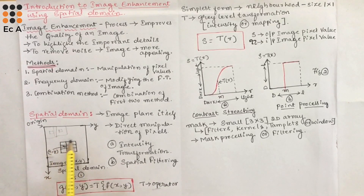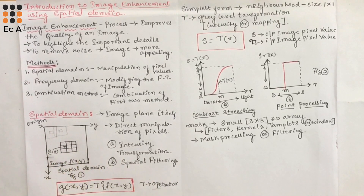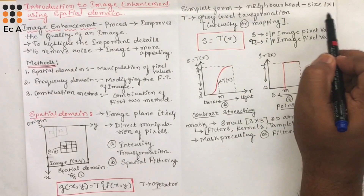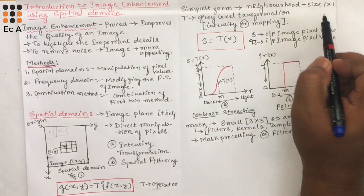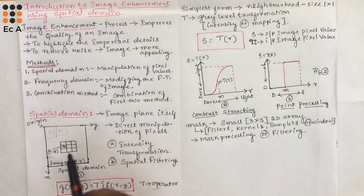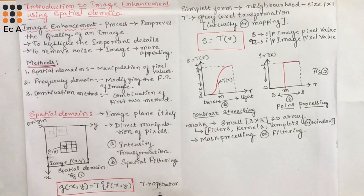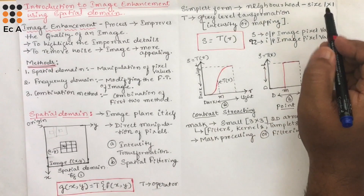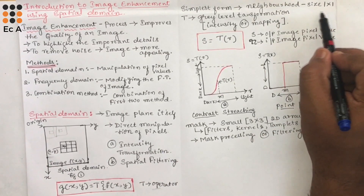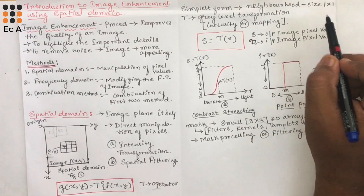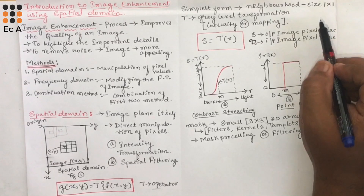Likewise, this operation is performed on the entire pixels of the image. The simplest form of T is when the neighborhood is of size 1×1, which means if we take only one pixel, that is the simplest form of the operator T. In this case, if we take the neighborhood of size 1×1, which is a single pixel, g will depend upon the value of f at (x,y).